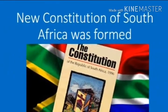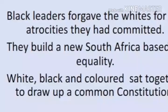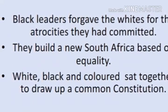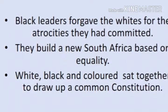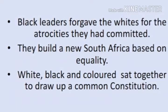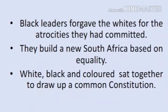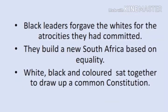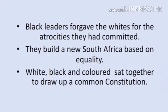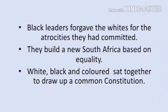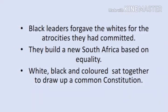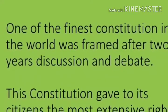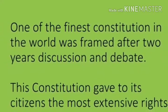After the emergence of the new democratic South Africa, black leaders appealed to their fellow blacks to forgive the whites for the atrocities they had committed while in power. They built a new South Africa based on equality of all races, men and women, on democratic values, social justice and human rights. The party that had ruled through oppression and the party that led the freedom struggle sat together to draw up a common constitution. After two years of discussions and debate, they came out with one of the finest constitutions the world has ever had.